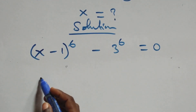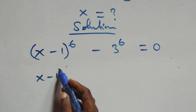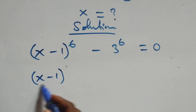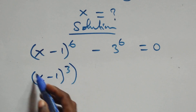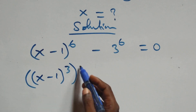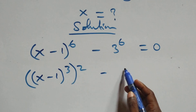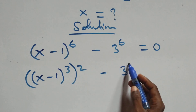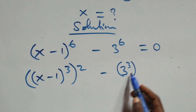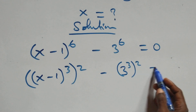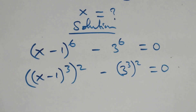The next step: we can write this as x minus 1 all raised to the power 3, then all raised to the power 2, minus 3 raised to the power 3, then all raised to the power 2, equals 0.